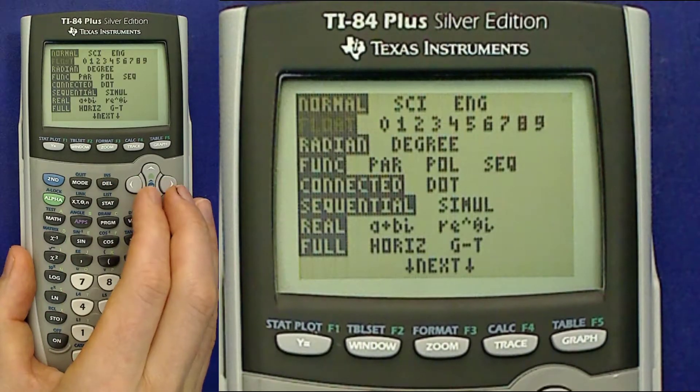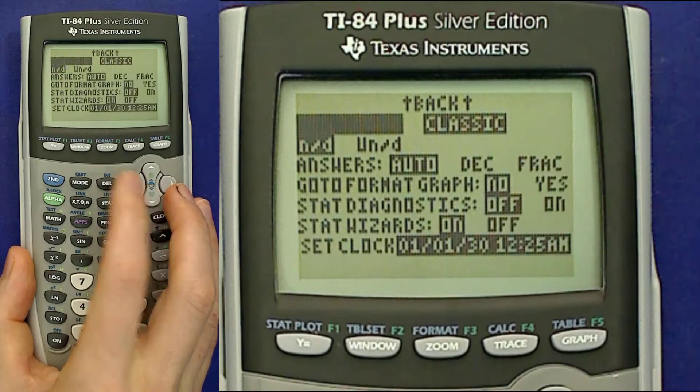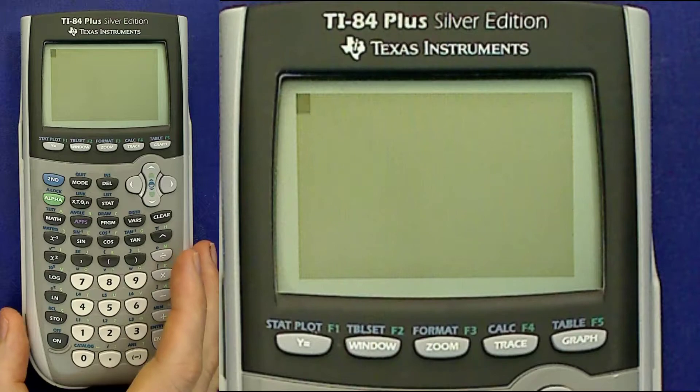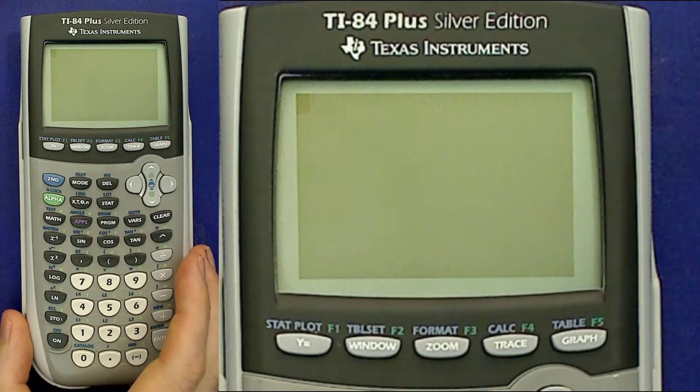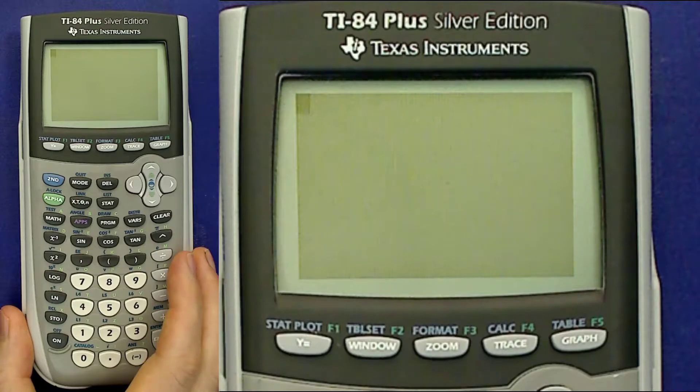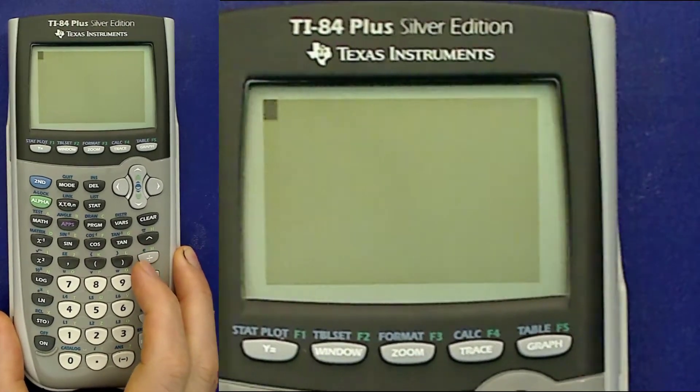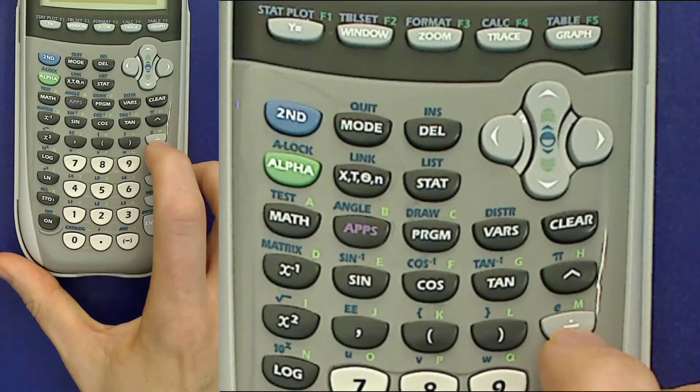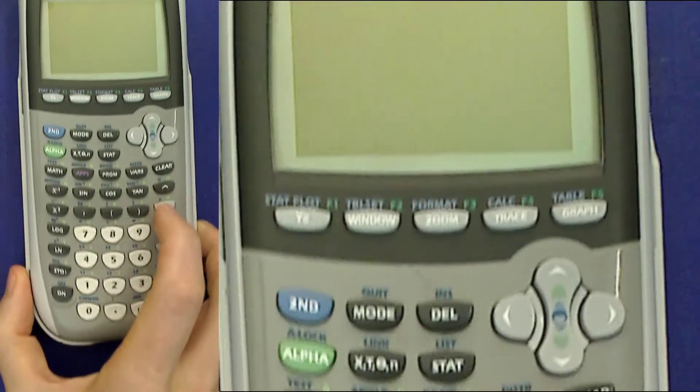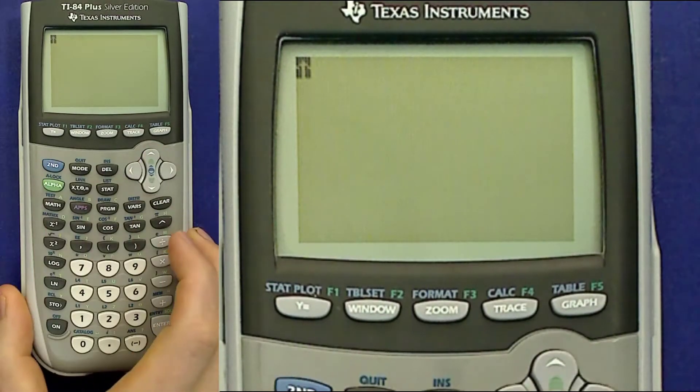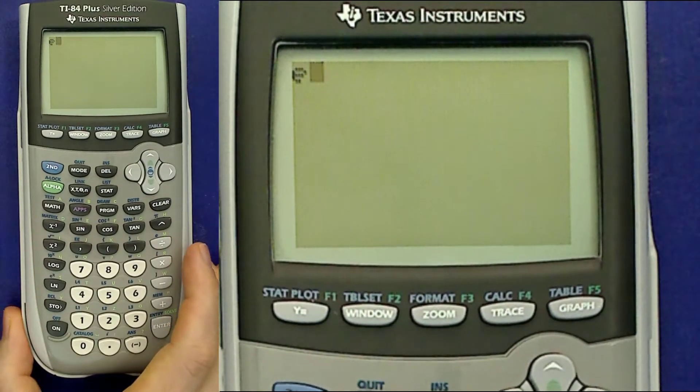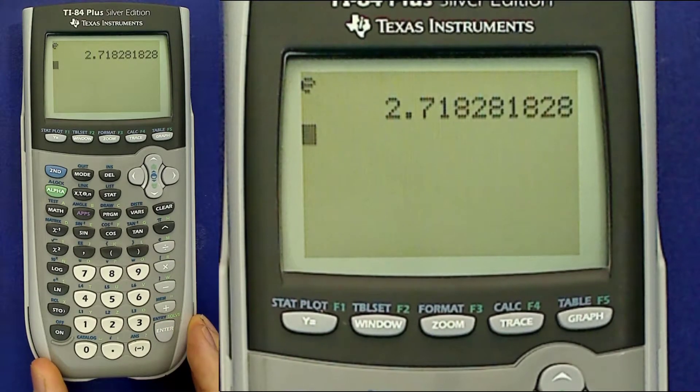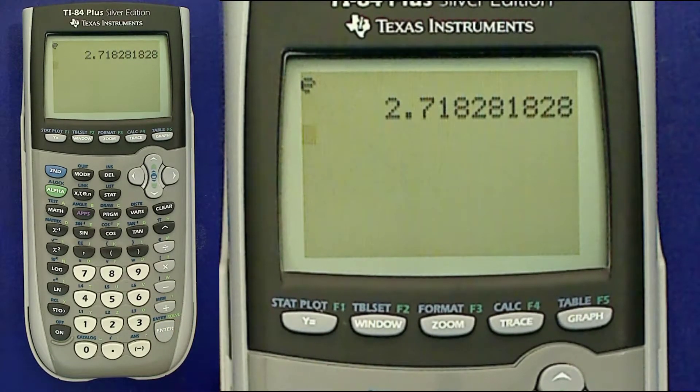I'm going to go back to math print mode on this calculator and show you the other e symbols that you might see on the calculator. First, over the division key right here, there's a little lowercase e that generates just a lowercase e without an exponent. And if you evaluate that, that's just an approximation for the magic constant e.